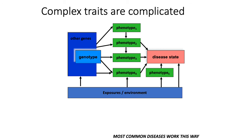One of the hallmark traits about complex traits is that genetic variants associated with those traits tend to have lower effect sizes than in Mendelian disorders. What that means is that genetic variants associated with complex traits, on average, don't have as much of an individual effect as they would in Mendelian disorders, because you have hundreds or thousands of genes contributing to variation in that trait.